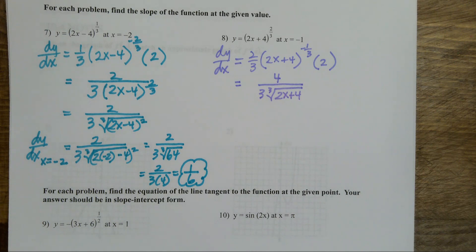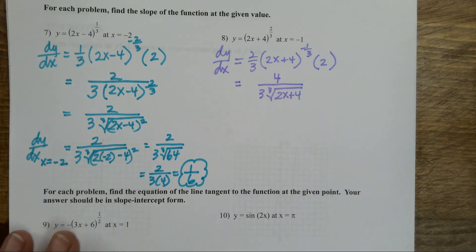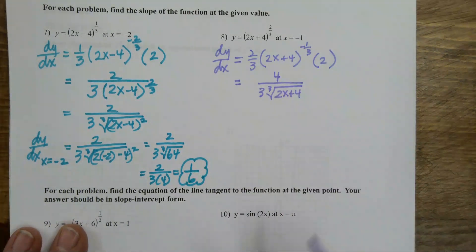I bring that down, make it positive — that's 2x plus 4 to the one-third power. And what does that mean? That is the cube root of 2x plus 4. I am evaluating at negative one.